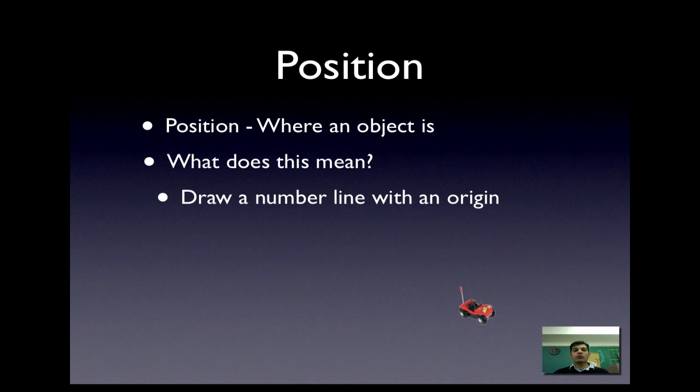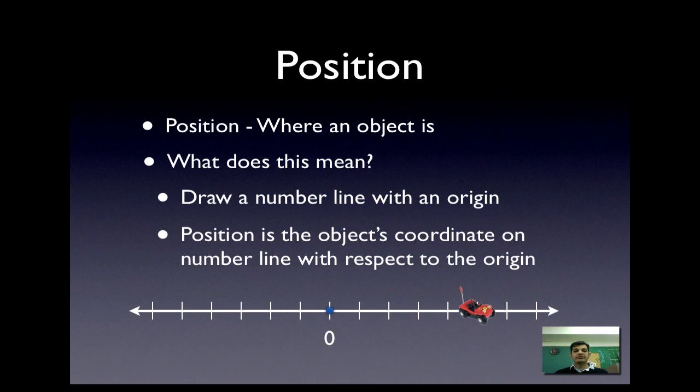We're going to define position using a process, not just a definition. Our process means we draw a number line with an origin. Then the position is the object's coordinate on that number line with respect to the origin. So we're 5 ticks away, so we say our position is 5 because we just look at our coordinate on that number line. The origin is the reference point. The buggy's position is at 5. That's where it is, and since that's where it's starting we can call that its initial position.